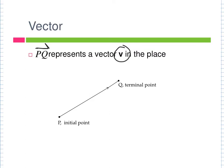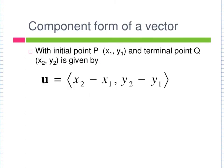The first thing we're going to learn about a vector is component form. Component form is the change in x followed by the change in y — kind of like slope except it's not written as a ratio and you do x first. It's also different from slope because order is important: you must do terminal minus initial. So it's the terminal x minus the initial x, comma, the terminal y minus the initial y.